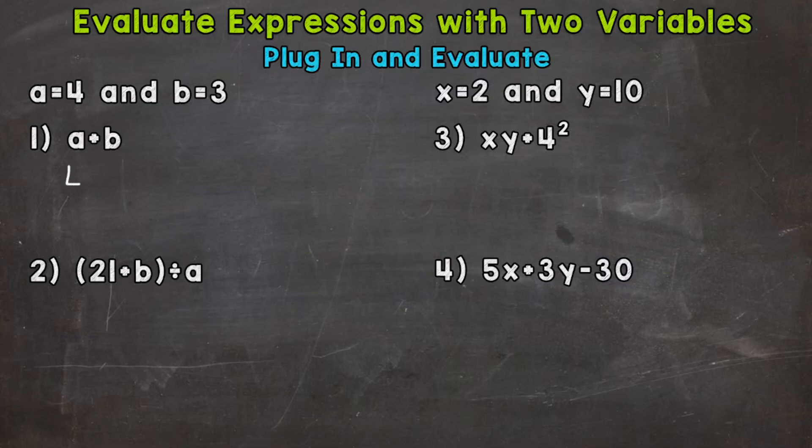So for a, we need to plug in 4, plus for b, we need to plug in 3. Now we evaluate. 4 plus 3 gives us an answer of 7.